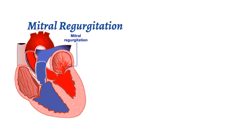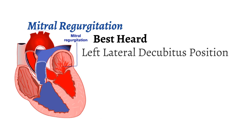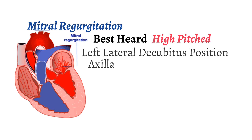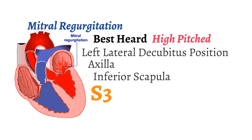Mitral regurgitation is the first holosystolic murmur we will discuss. Mitral regurgitation is when the mitral valve is floppy, resulting in the backflow of blood across the valve. It is best heard when a patient is lying down on their left side, called the left lateral decubitus position. It sounds like this. The mitral regurgitation murmur is a high-pitched murmur that can radiate to the left axilla, or armpit, and to the back, specifically at the bottom portion of the scapula, otherwise known as your shoulder blade.